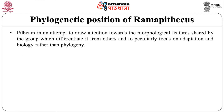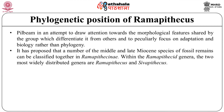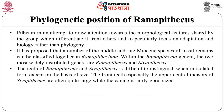Pilbeam, in an attempt to draw attention to morphological features shared by the group, proposed that a number of middle and late Miocene species of fossil remains can be classified together within the Ramapithecus group. Within the Ramapithecini tribe, the two most widely distributed genera are Ramapithecus and Sivapithecus. The teeth of Ramapithecus and Sivapithecus are difficult to distinguish when in isolated form, except on the basis of size.